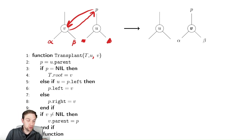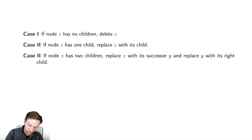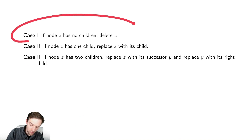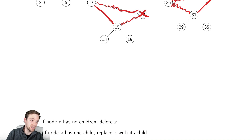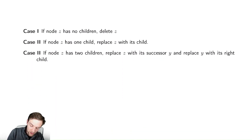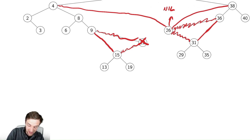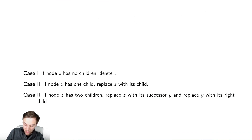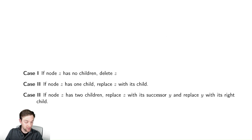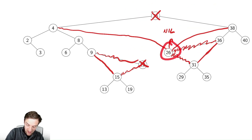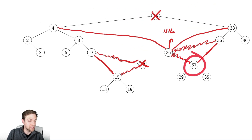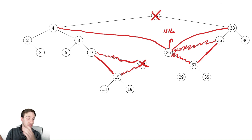With this in our head, let us figure out how we're going to implement this. We had a couple of cases. Our first case: if we have no children, we just delete the node — that was our case of deleting 3, nice and easy. If we have only one child, we replace with our child — that was our case of deleting node 22. And then if we have two children, we replace the node with the successor and replace the successor with its right child. So I moved 26 to be the root and replaced 26 with its right child 31. The code here will look messy because we need to make sure to get all the pointers in the right places.